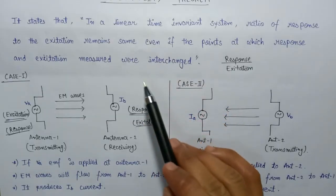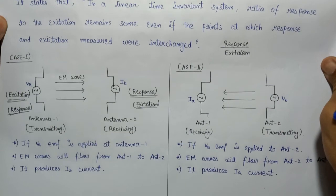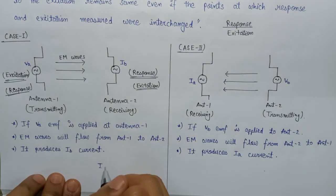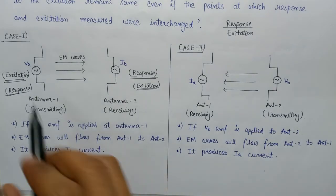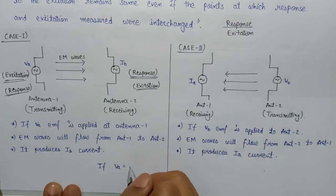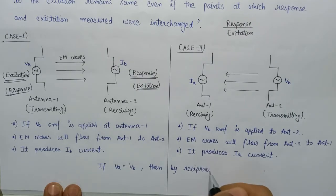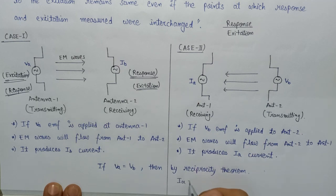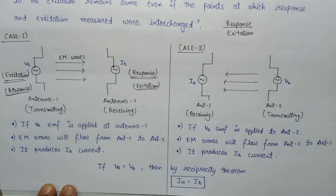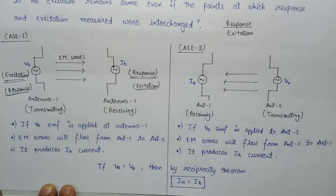According to the reciprocity theorem, if the voltage V applied in Case 1 equals the voltage V_B applied in Case 2, then the currents are also equal — that is, I_A equals I_B. This is the proof of the reciprocity theorem, by which we can say that the characteristics of the transmitting and receiving antenna remain unaffected even if the response and excitation are interchanged. This is all about the receiving antenna.